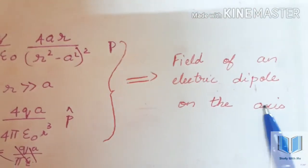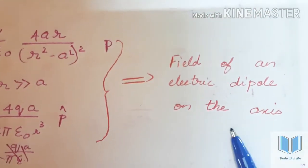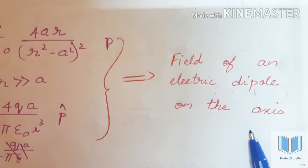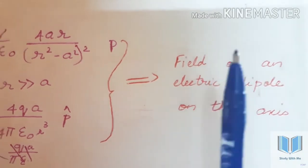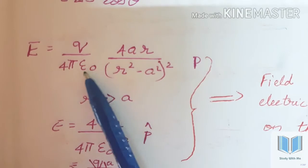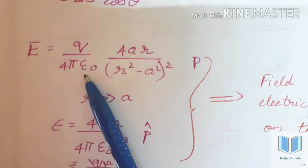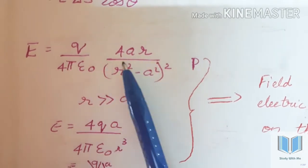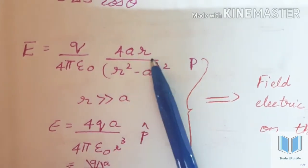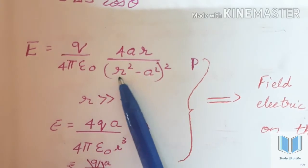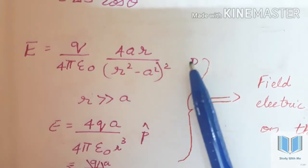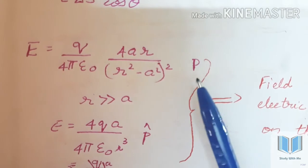Field of an electric dipole. On the equatorial axis, the formula is E equal to 1 by 4πε₀ into 4ar by r squared minus a squared. This gives the field in terms of the dipole moment p.